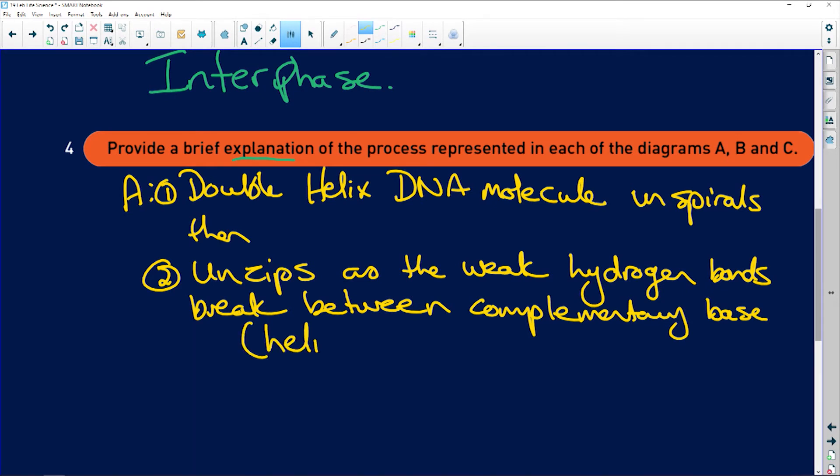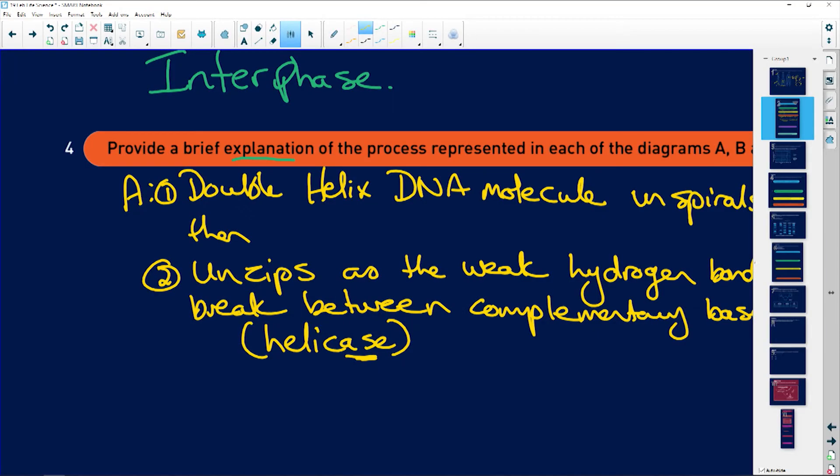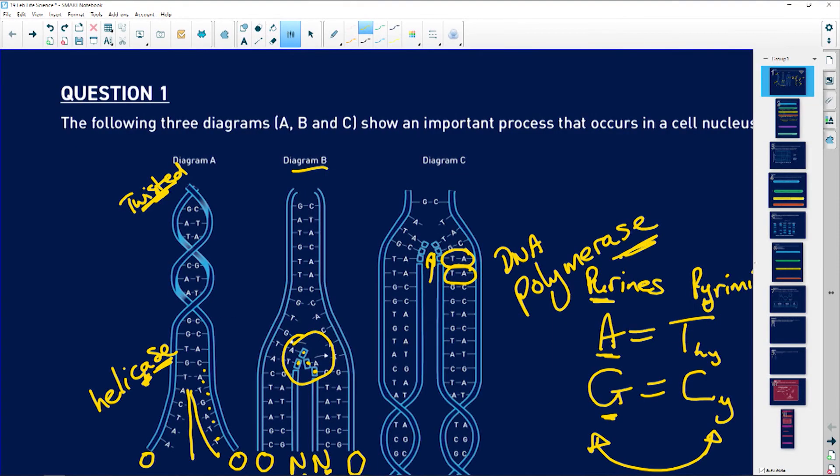The enzyme that caused this was helicase. This is mainly for the IEB kids that must know helicase. For the National Senior Certificate learners, you just need to know that it is enzyme controlled, but there's no harm in telling you that it is helicase.